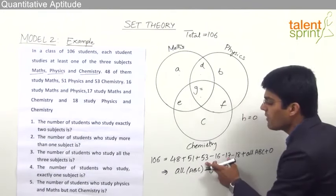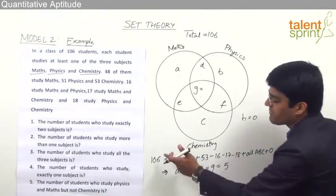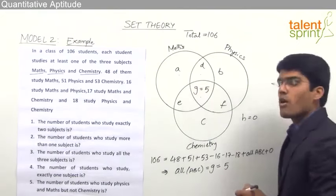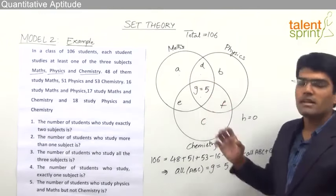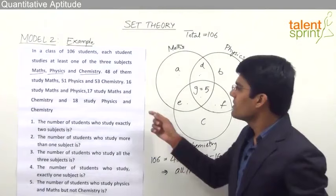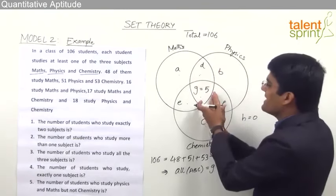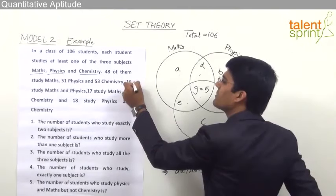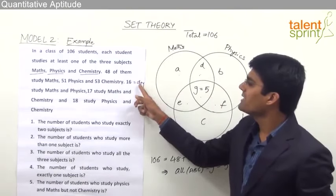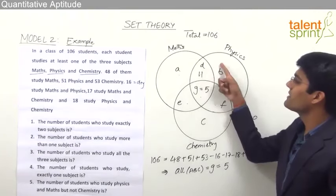Once the centermost region is known, we fill the remaining regions. D plus G equals 16, and G is 5, so D = 16 − 5 = 11. So 11 students study Maths and Physics only but not Chemistry. Next, E plus G equals 17, and G is 5, so E = 17 − 5 = 12. So 12 students study Maths and Chemistry only but not Physics.